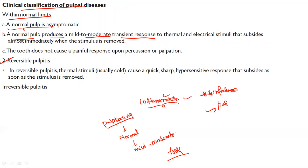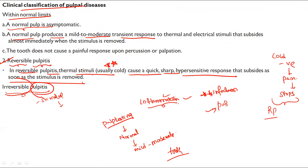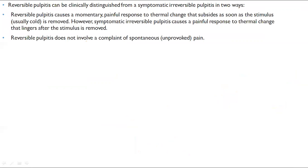Reversible pulpitis means the situation can be reversed — the infection in the pulp can be reversed. Thermal stimuli, usually cold, cause a sharp, quick hypersensitive response that subsides as soon as the stimulus is removed. Irreversible pulpitis means even when the stimulus is removed the pain still remains — the pulp undergoes death, becomes non-vital, and must be removed. In irreversible pulpitis there are two kinds: symptomatic irreversible pulpitis, where the pulp is still responding, and asymptomatic irreversible pulpitis, where the pulp is not responding.